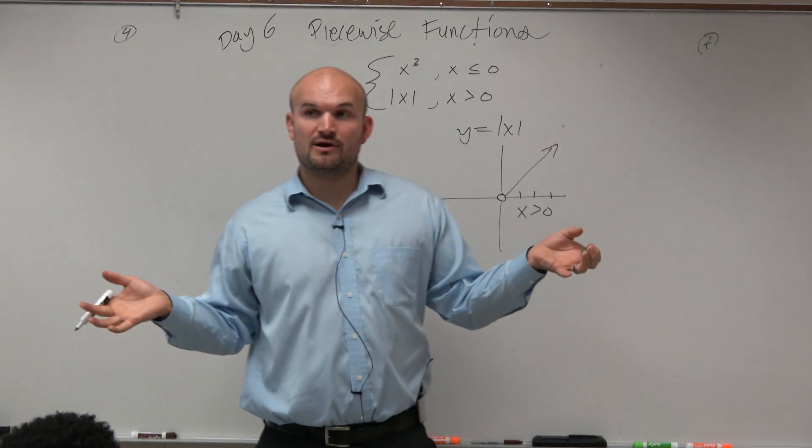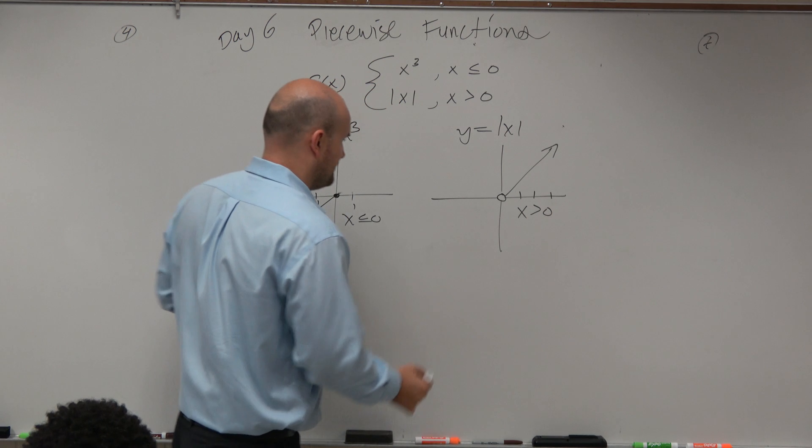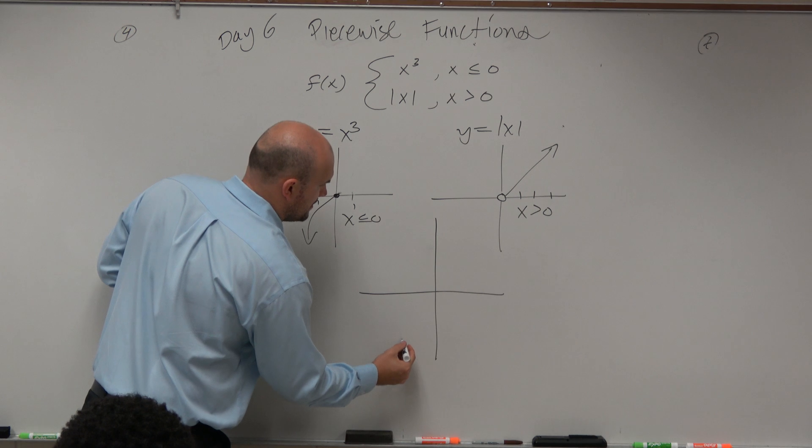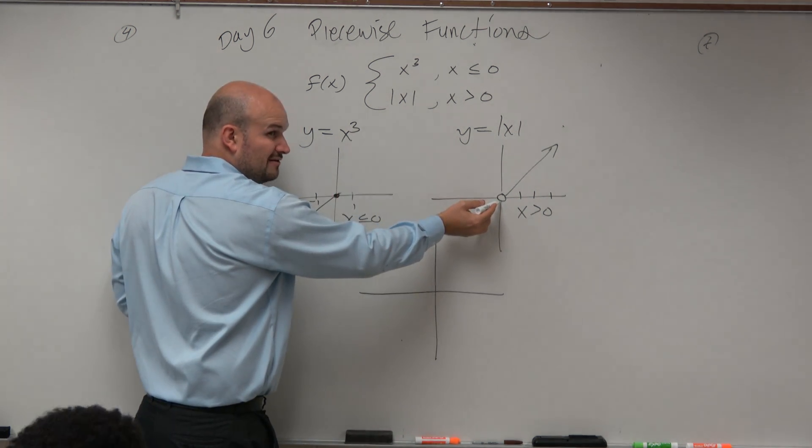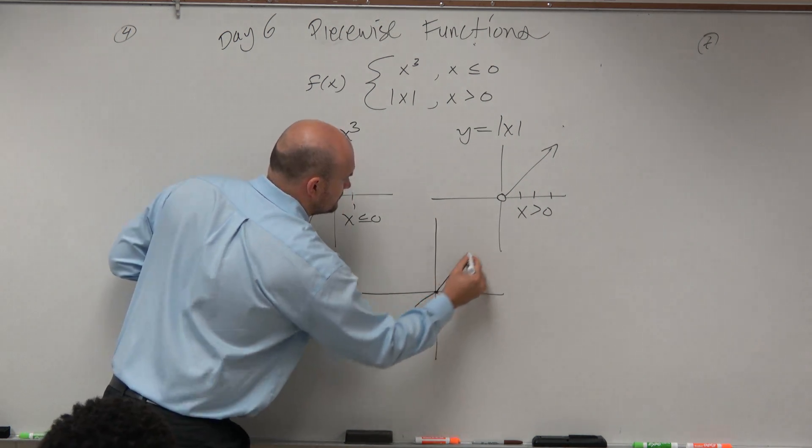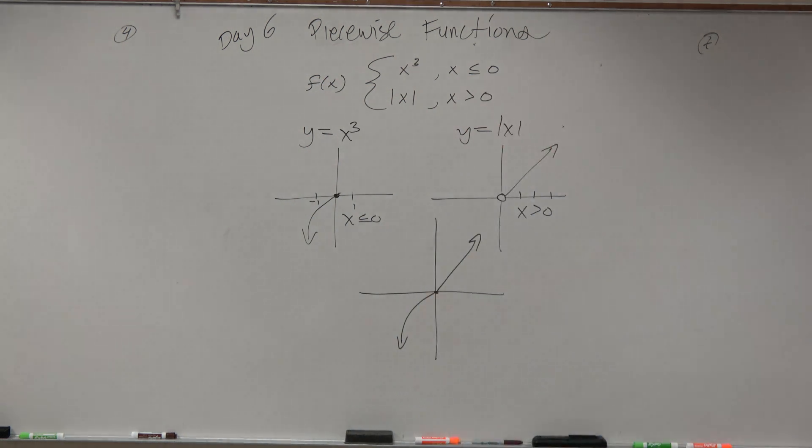All we do to graph the piecewise function is take both functions and put them together. Now, if you put a filled-in hole on top of an empty hole, you're going to have a filled-in hole. And there you go.